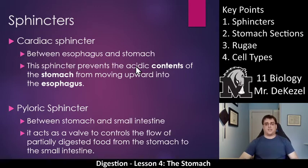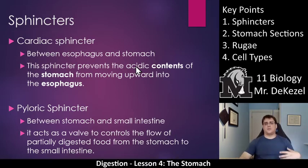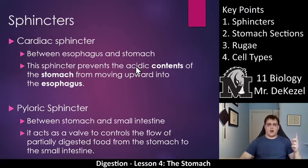Then there's the pyloric sphincter at the bottom, and its job is to regulate how much moves from the stomach into the small intestine. It acts as a valve to control the flow of partially digested food from the stomach into the small intestine — you don't want to let too much at once. You want to release food in bursts so that gastric juices can break it down. So it is a regulator for what is allowed out of the stomach. Cardiac is at the top; pyloric is at the bottom. That is key point one: sphincters.